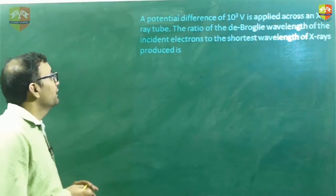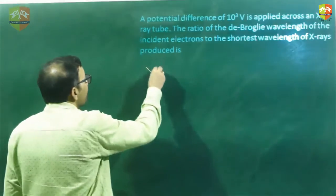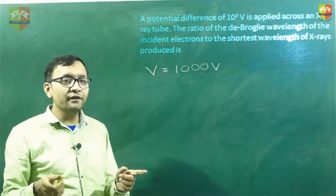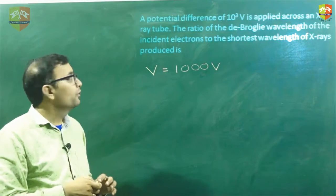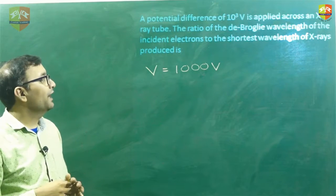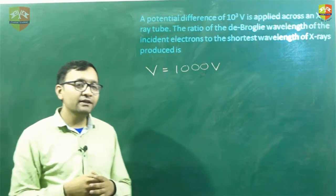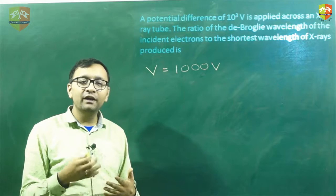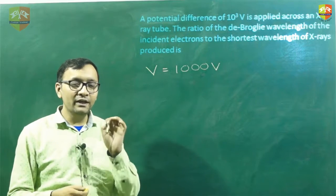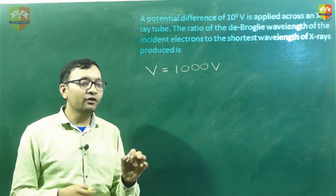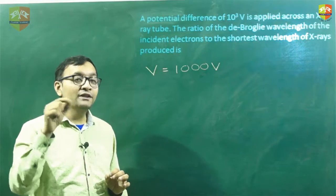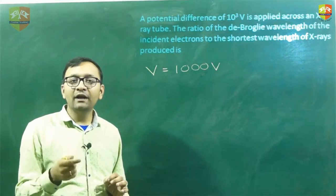Here is the first one. It says that a potential difference of 1000 volts is applied across an x-ray tube. The ratio of the de Broglie wavelength of the incident electron to the shortest wavelength of the x-ray produced is what? Now, the shortest wavelength of the x-ray will be produced when the entire energy of the electron gets converted into a photon's energy, because one electron can only create one photon.